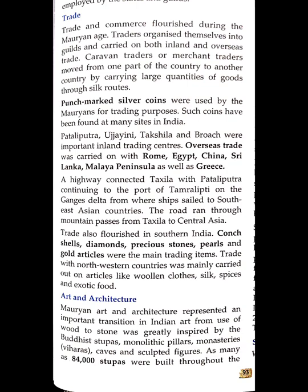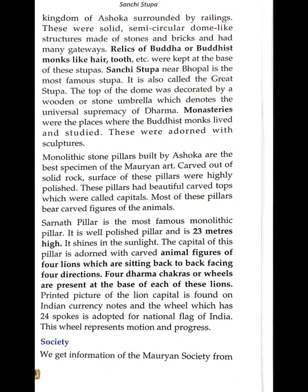Mauryan art and architecture represents an important tradition in India. The shift from use of wood to stone was greatly inspired by Buddhist stupas, monolithic pillars, monasteries, viharas, caves, and sculpted figures. As many as 84,000 stupas were built throughout the kingdom of Ashoka, surrounded by railings.